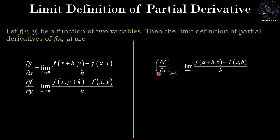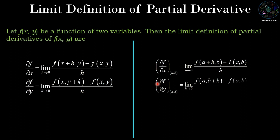If we want to find the partial derivative at a particular point (a, b), we replace x and y by a and b in the definition. So ∂f/∂x at (a,b) = limit h→0 of [f(a+h, b) − f(a,b)] / h. Similarly, ∂f/∂y at (a,b) = limit k→0 of [f(a, b+k) − f(a,b)] / k. Now we will use this definition in the examples.